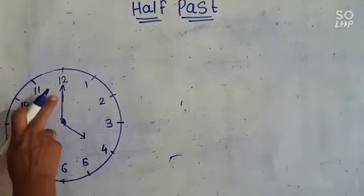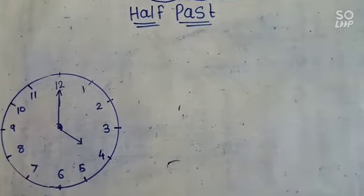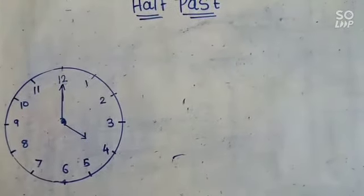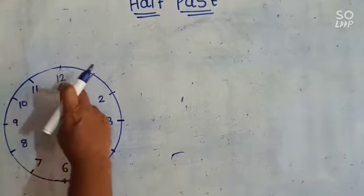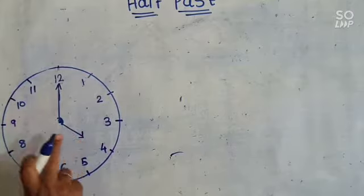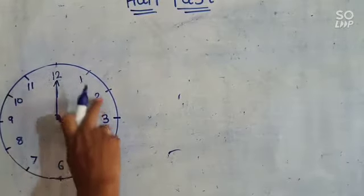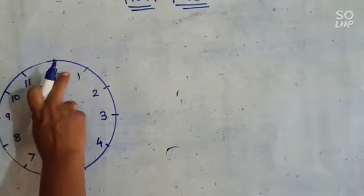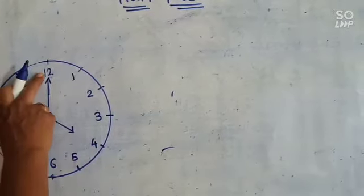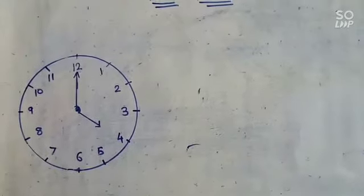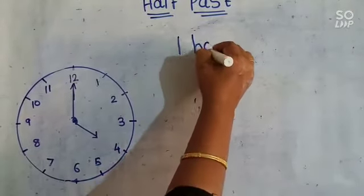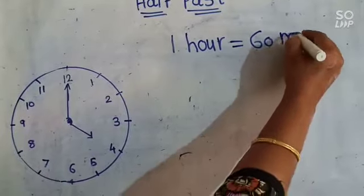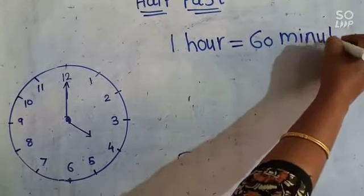Now this long hand tells me — the long hand is the minute hand and this short hand is our hour hand. These two hands, the minute hand and the hour hand, are always moving. This minute hand moves from 1 to 12, then it completes 1 hour. And 1 hour is equal to 60 minutes.